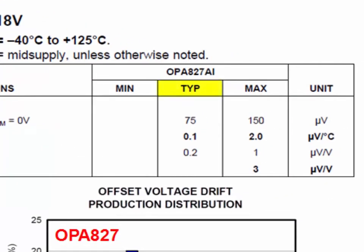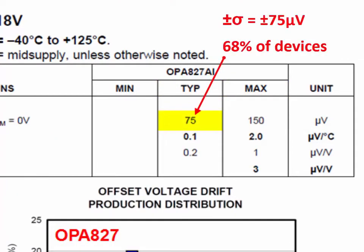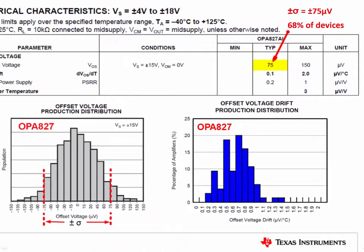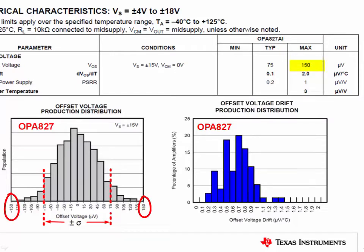Note that we have a typical and a maximum specification. The value listed in the typical specification will cover plus or minus one standard deviation, or plus or minus sigma, on a Gaussian distribution. This means that 68% of the device population will be less than the typical value. So in this case, 68% of devices would have less than plus or minus 75 microvolts of VOS. The maximum is a tested value, so you will never find a device with greater than the maximum VOS of plus or minus 150 microvolts.